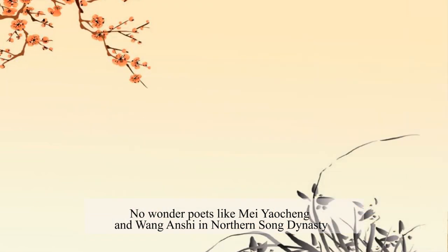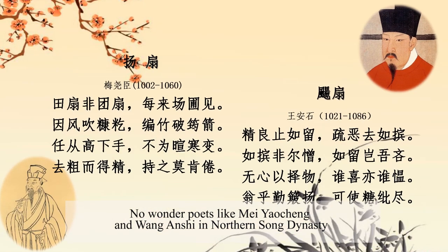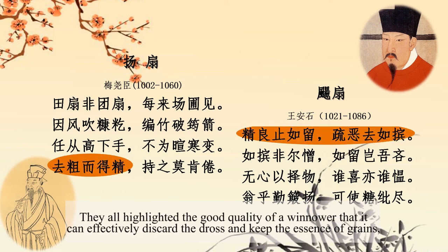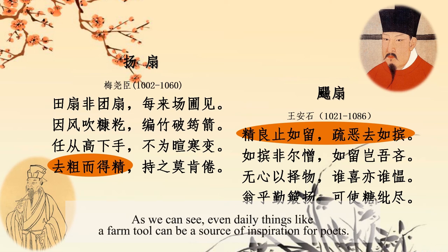No wonder poets like Mei Yaocheng and Wang Anshi in the Northern Song Dynasty both wrote poems in praise of the winnower. They all highlighted the good quality of a winnower — that it can effectively discard the undesirable and keep the essence of grains — which equates to the quality of a person. As we can see, even daily things like a farm tool can be a source of inspiration for poets.